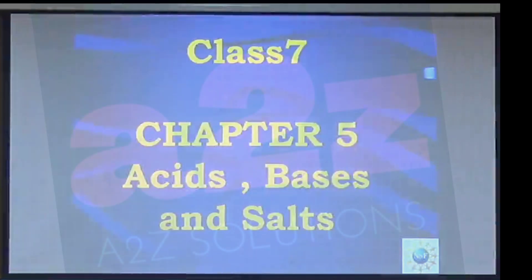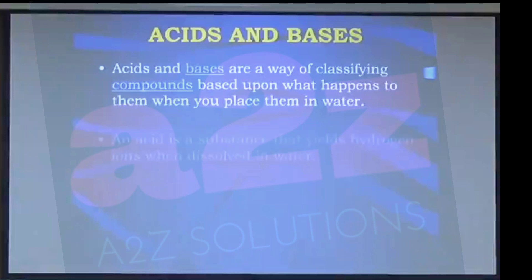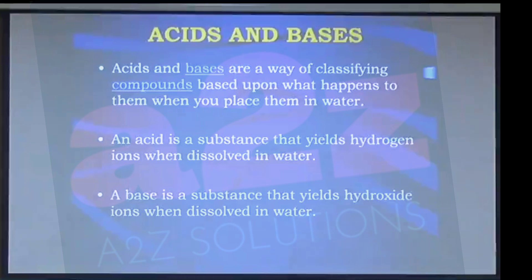We are dealing with chapter 5, that is acids, bases and salts. In this chapter you are going to come across different substances which you see in your daily life and you will categorize them as acids, bases and salts. So now let us first try to understand what we mean by acids and bases.